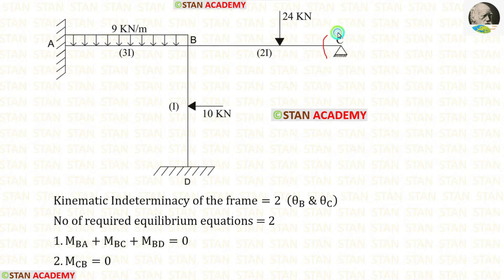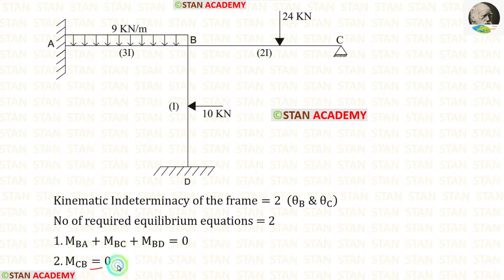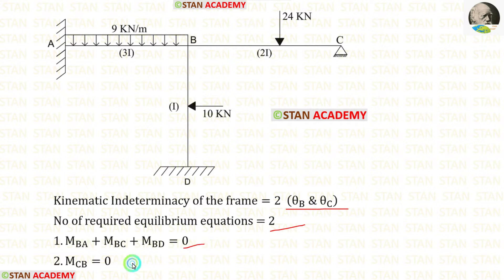At point C, there is a hinged support, so point C is a simply supported end. At a simply supported end, there will be no moment. So the moment at point C, MCB, will be zero. We needed two equilibrium equations and we have now established them.